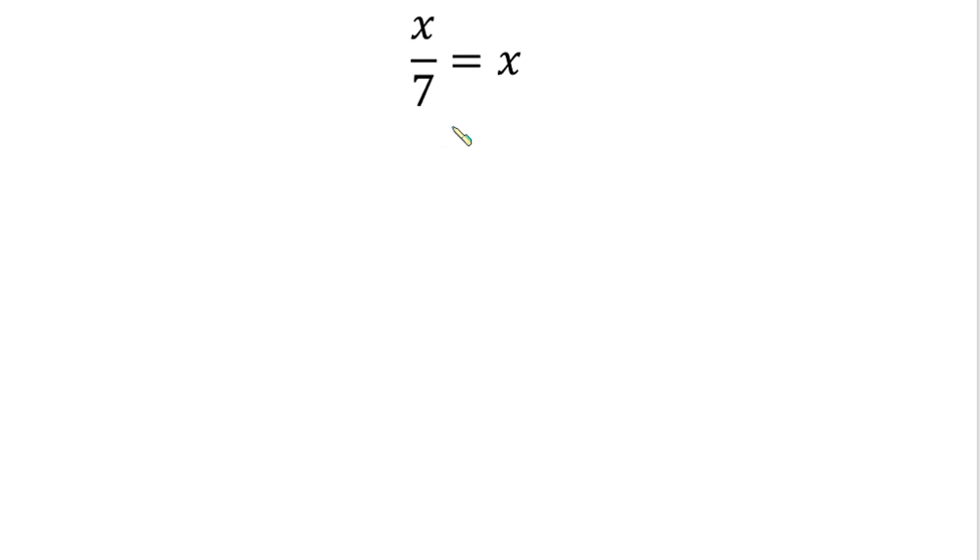Hello everyone, how do we solve x over 7 equals x? Let's get started. First, let's subtract x from each side of the equation.